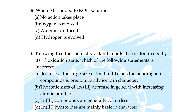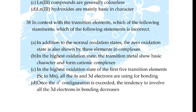Question 37: knowing that the chemistry of lanthanoids is dominated by the +3 oxidation state, which of the following statements is incorrect — option A: because of the large size of Ln³⁺ ions the bonding is predominantly ionic, option B: the ionic sizes of Ln³⁺ decrease with increasing atomic number, option C: Ln³⁺ compounds are generally colorless, option D: Ln³⁺ hydroxides are mainly basic in character? Correct answer is option C: Ln³⁺ compounds are generally colorless.